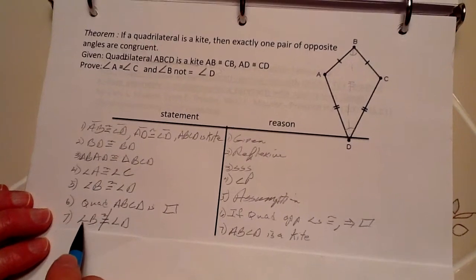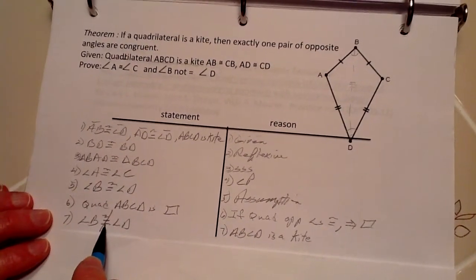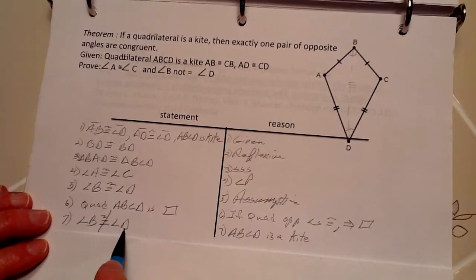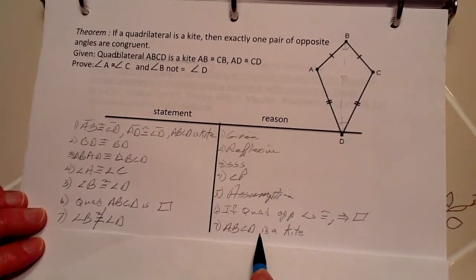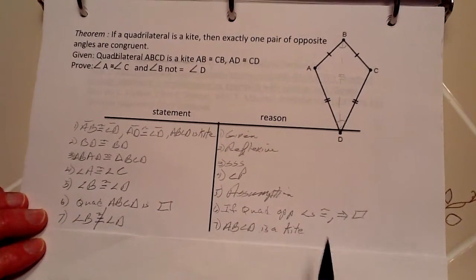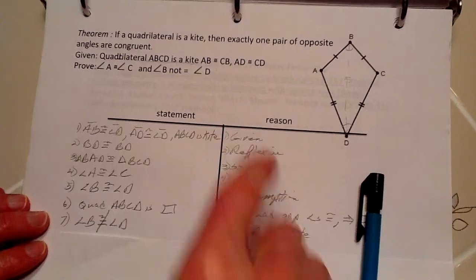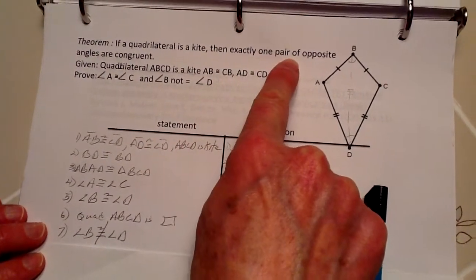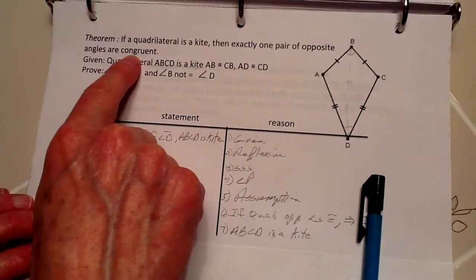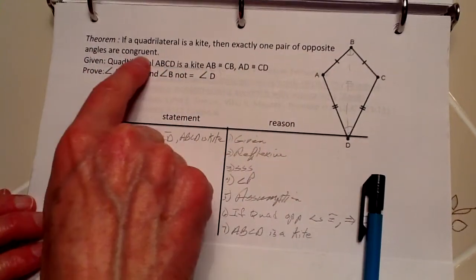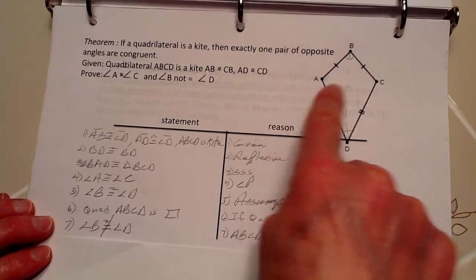Therefore, angle B is not congruent to angle D because ABCD is a kite. So, we have just proven that exactly one pair of opposite angles are congruent. This one and this one.